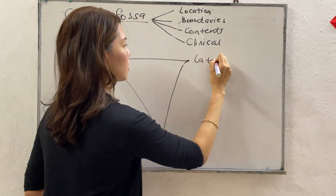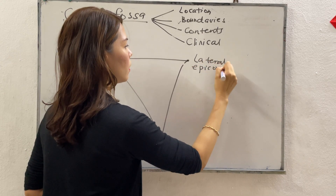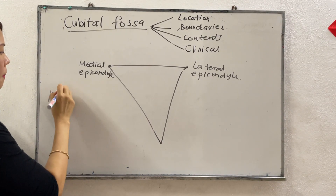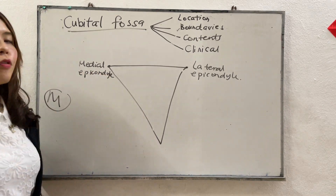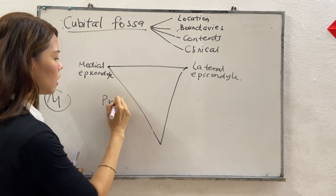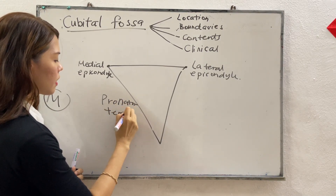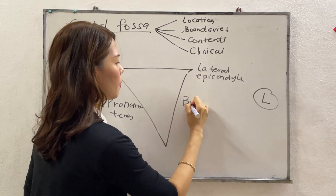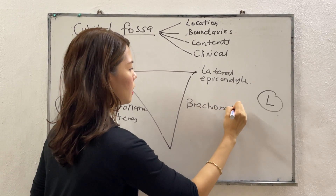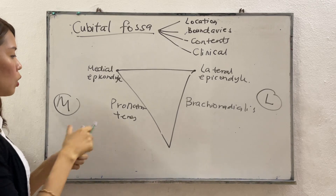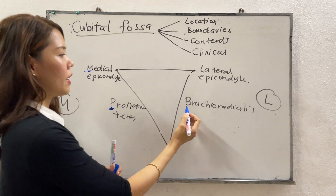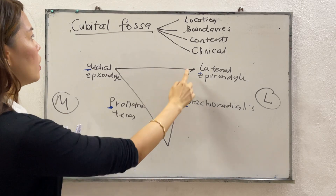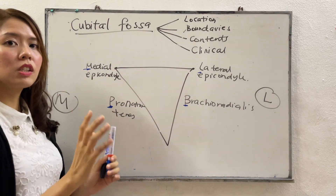The medial boundary of the cubital fossa is formed by this muscle here — pronator teres. The lateral boundary of the cubital fossa is formed by the brachioradialis. To remember these: PM — prime minister — and BL, because the prime minister is the best leader. These are the three structures that form the boundaries of the cubital fossa.